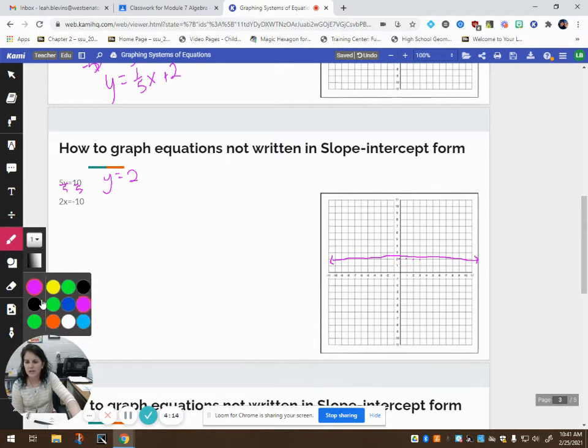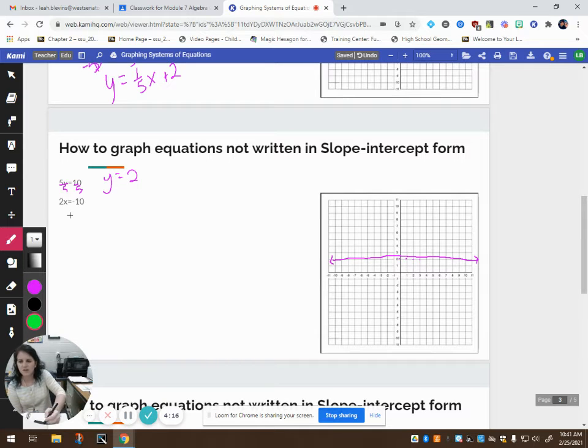So similarly, I want to look at this bottom equation. I'm going to divide both sides by 2 to get x by itself. And I have x equals negative 5. So this time, it doesn't matter what my value of y is. All of my x's are here at negative 5. So where do these two lines intersect? They intersect right here at negative 5 comma 2. That is the solution to this system of equations.